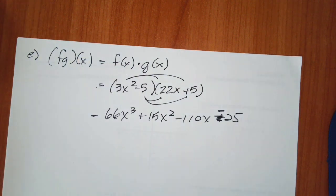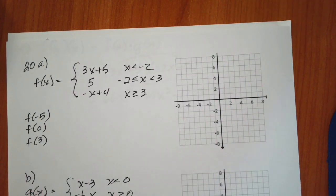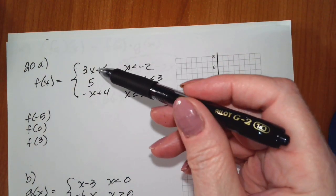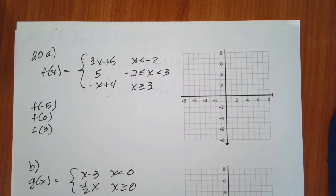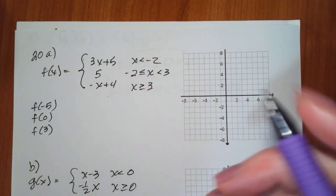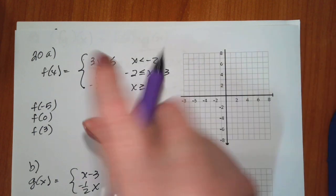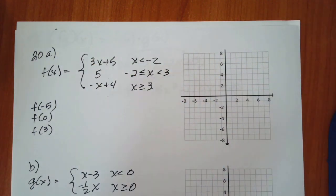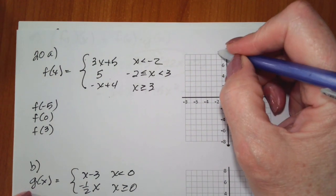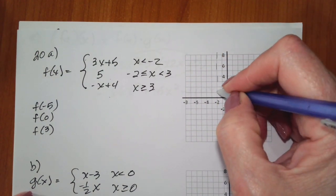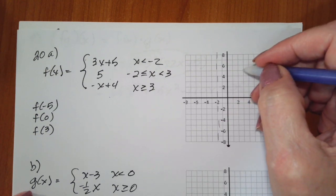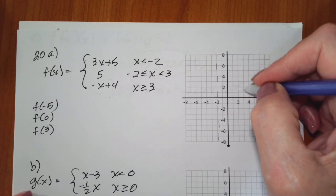Okay, so now we can go to problem 20. These are piecewise functions, which means the function is defined differently for different parts of the domain. I like to graph it first and then do the evaluation. The first thing I do is mark my boundaries — I know I'm going to switch functions at negative 2, and I'm going to switch functions at 3.